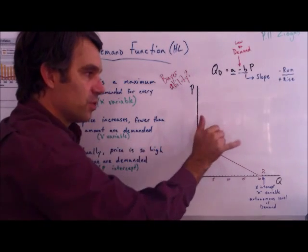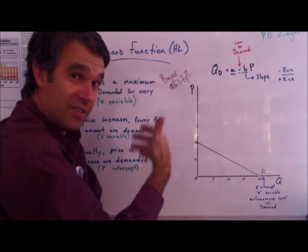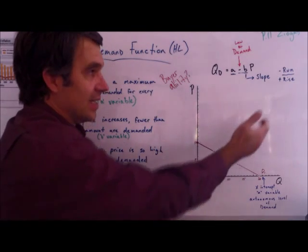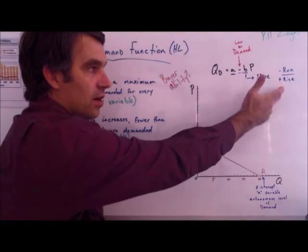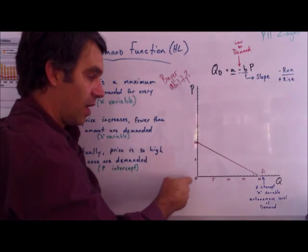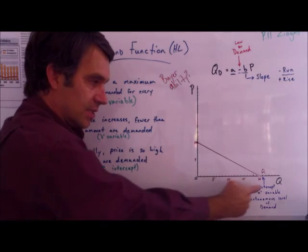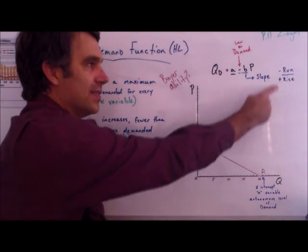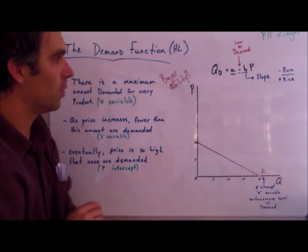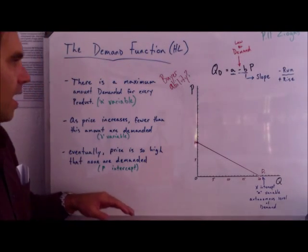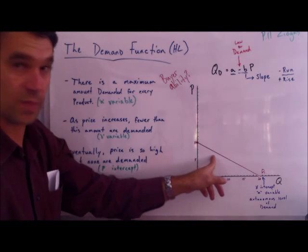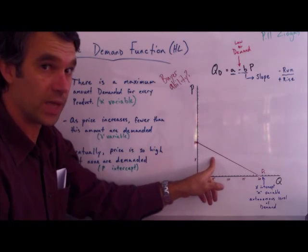Because we've switched those axes, even though you're used to slope being rise over run, in this case it's going to be run over rise. And because for every positive rise in price there's a negative run in quantity, we say it's a negative run over rise.